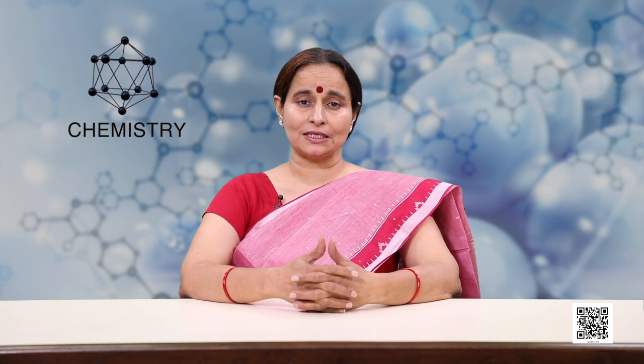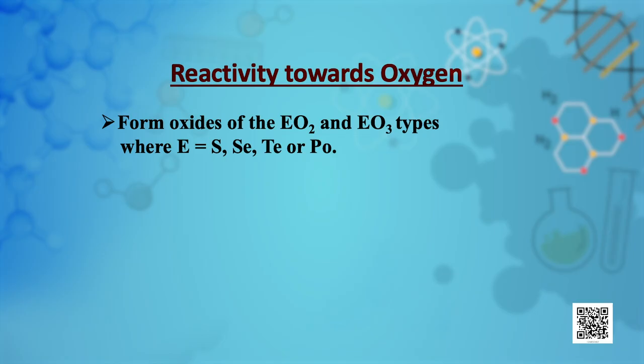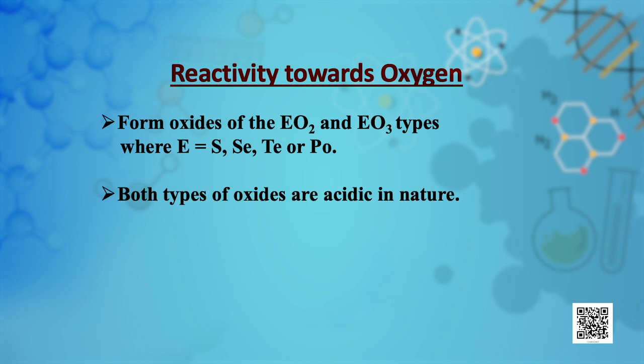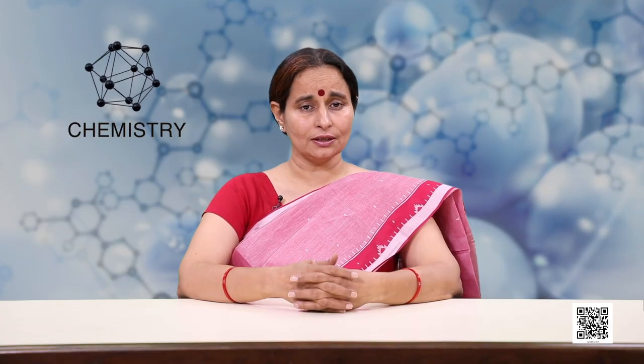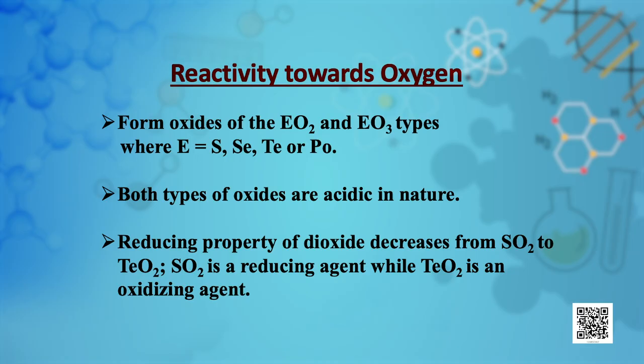Elements of group 16 react with oxygen to form oxides of the EO2 and EO3 type, where E is selenium, sulphur, tellurium or polonium. Both types of oxides are acidic in nature. Ozone (O3) and sulphur dioxide (SO2) are gases, while selenium dioxide (SeO2) is a solid. The reducing property of dioxides decreases from SO2 to TeO2, so sulphur dioxide acts as a reducing agent while tellurium dioxide acts as an oxidizing agent.